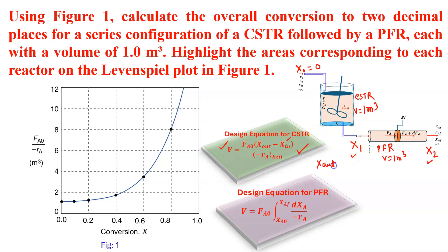Design equation for PFR is V equals FA0, XA0 to XA, DXA by minus RA. XA0 is nothing but X1 and XF is nothing but X2. V is given, so we have to find out X2.